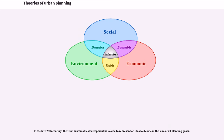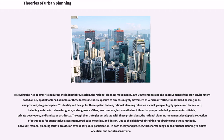In the late 20th century, the term sustainable development has come to represent an ideal outcome in the sum of all planning goals. Following the rise of empiricism during the Industrial Revolution, the rational planning movement emphasized the improvement of a built environment based on key spatial factors.